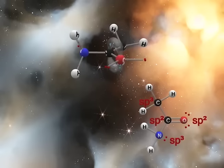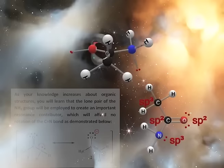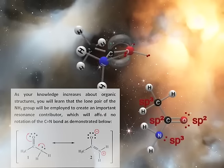We see that the CH3 group can spin freely about the carbon-carbon sigma bond, while the pi bond affords no rotation. In addition, the NH2 group can spin freely about the carbon-nitrogen sigma bond.